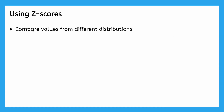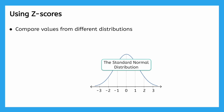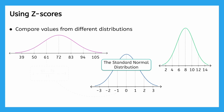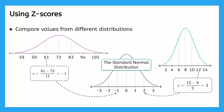Z-scores also allow us to compare values across different distributions. When we convert values to z-scores, we're transforming them into a special kind of distribution called the standard normal distribution. This is a normal distribution that has a mean of 0 and a standard deviation of 1. That means any data point, no matter where it came from originally, is now being measured in terms of how far it is from the mean using a common unit — standard deviations. This allows us to compare values from totally different contexts, even if they have different units or spreads, which is exactly what we need to compare our golf and bowling scores.